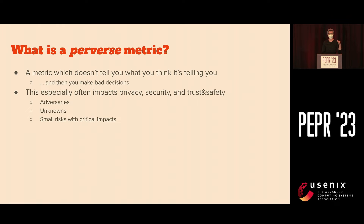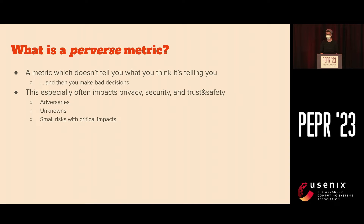But what we're specifically going to talk about is perverse metrics. Perverse metrics is a term I use by analogy with perverse incentives. A perverse incentive is something that makes people do something that wasn't anticipated and is probably bad. A perverse metric is one that doesn't tell you what you think it's telling you, and then you use that to make bad decisions. This screws us up badly in privacy and in fields like security, trust and safety — all risk-based fields — because we have adversaries, unknowns, and small risks with critical impacts.